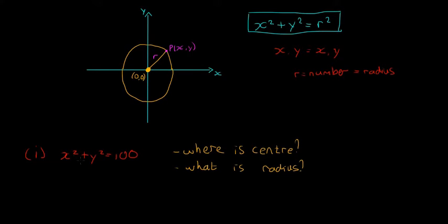Because it's in this form here, x squared plus y squared is equal to something squared, we know that it's a circle with the center at the origin. So the center is at origin (0,0). And then what is its radius? We know that r squared is equal to 100, so the radius is 10 units long.